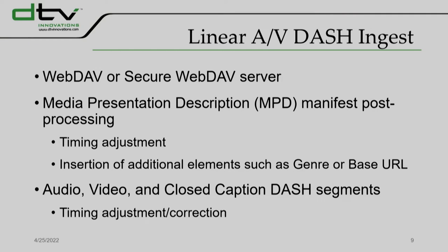If there's any issue with what's coming in, we'll correct it so segments are presented at the right time. We can also insert additional elements the customer may need, such as taking the genre from the listing and putting it into the DASH component, or using a base URL if it's a hybrid service with over-the-top components that need to be signaled to the receiver so they can be retrieved. Primarily the segments coming in are audio, video, and closed caption DASH segments, each with a number that is an offset from a start time in the manifest, and we can do correction of the package delivery by adjusting that number.